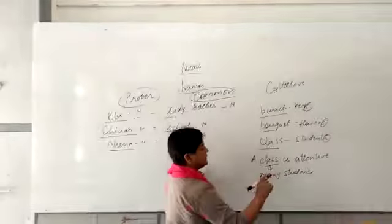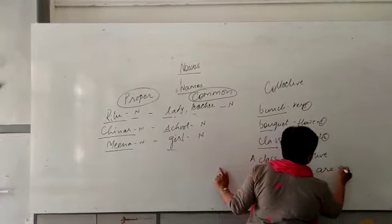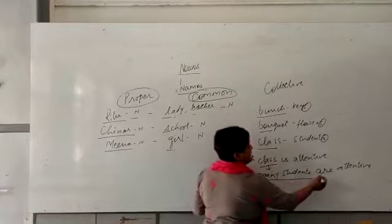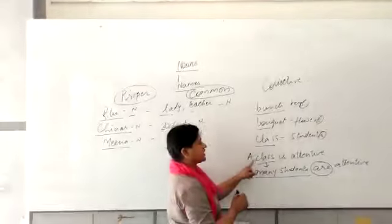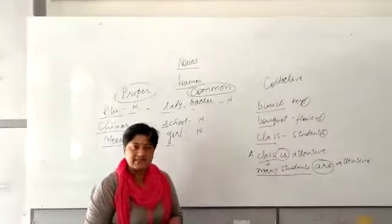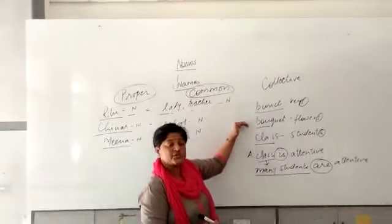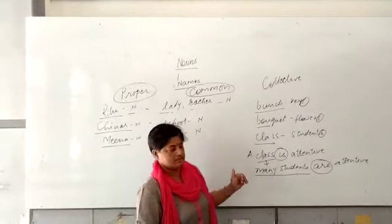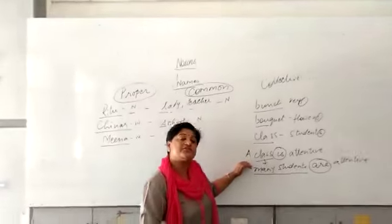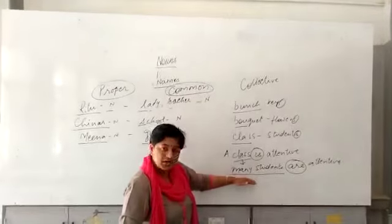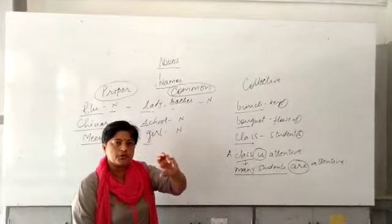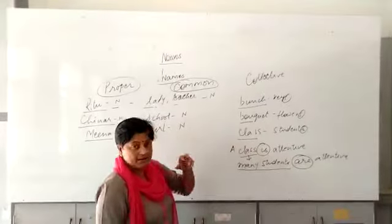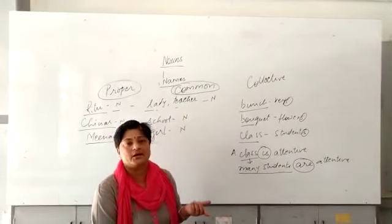So, I will say a class is attentive. But at the same time I can say many students are attentive. Again, if I am using the word many students, then I will use are. But if I am using the word class, I will use is. Is that clear to you all? How do we use collective nouns? You have done collective nouns and I am sure you remember them. Now the point is how to use it. We must use it as a singular noun. When we use the word, the common nouns, when we use the group. Things, we are talking about things. Then we use it as plural and we should use are.